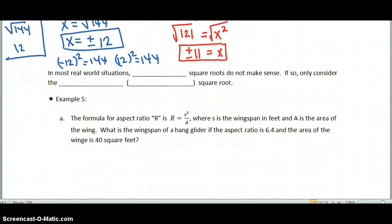In most real-world situations, negative square roots do not make sense. Okay? If we were talking about a measurement, we would throw out a negative. If we were talking about time, we would throw out a negative. So if so, you only consider the positive answer. The positive answer is also known as, a.k.a., the principal root. The principal square root is the positive root. So if you ever hear someone talk about the principal square root, you know they're talking about the positive square root.